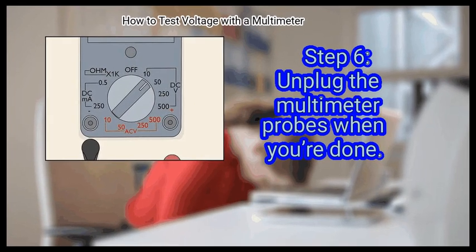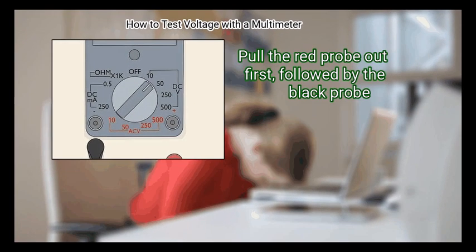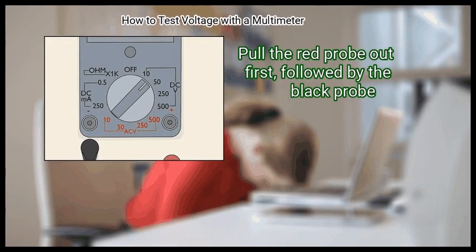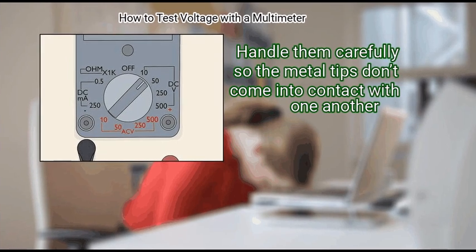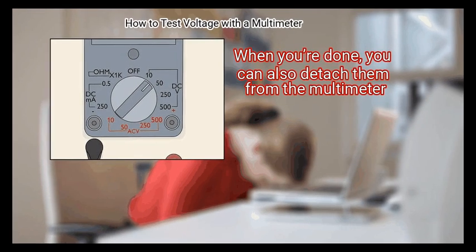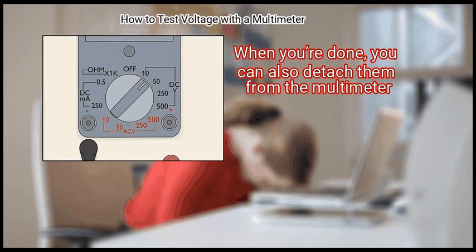Finally, unplug the multimeter probes when you're done. Pull the red probe out first, followed by the black probe. Handle them carefully so the metal tips don't come into contact with one another. When you're done, you can also detach them from the multimeter.